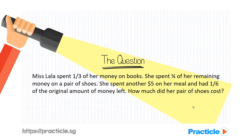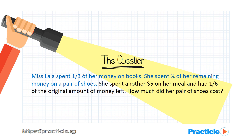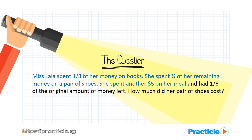Hi there! Did you manage to solve this Purrify Math problem sum on fractions? Let's read the question together. Miss Lala spent one-third of her money on books. She spent three-quarter of her remaining money on a pair of shoes. She spent another $5 on her meal, and had one-sixth of the original amount of money left. We are supposed to find the cost of a pair of shoes.